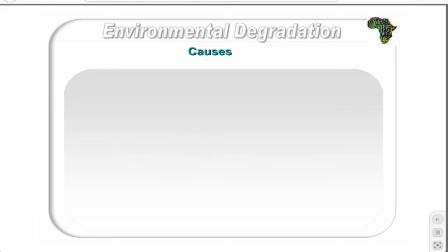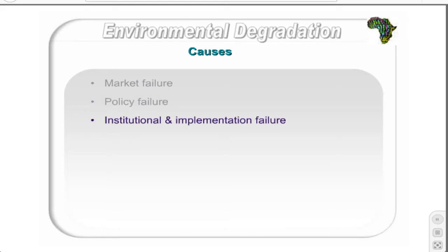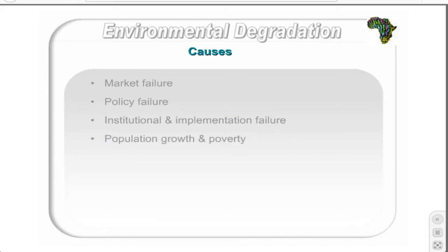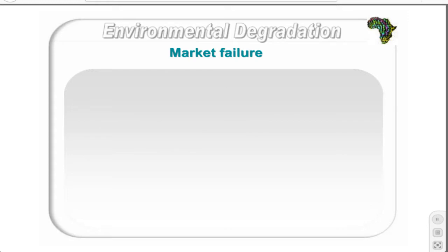The possible causes of environmental degradation are market failure, policy failure, institutional and implementation failure, and population growth and poverty. Each of these will be discussed in more detail. The most important economic cause is market failure.